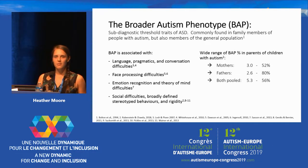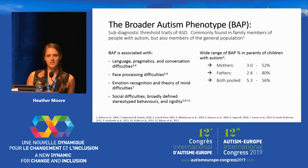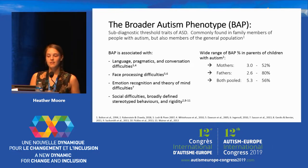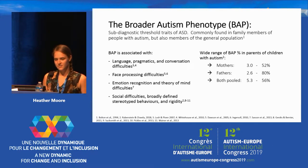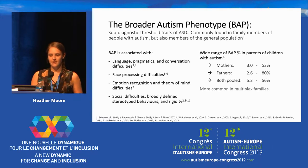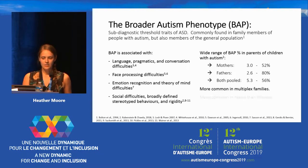A study by Rubenstein and Chawler in 2018 took 71 studies that mentioned rates of broader autism phenotype and found a wide range of rates in those studies, but they also found that the broader autism phenotype is more common in multiplex families and also more common in males than females.